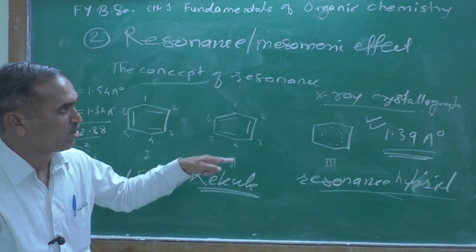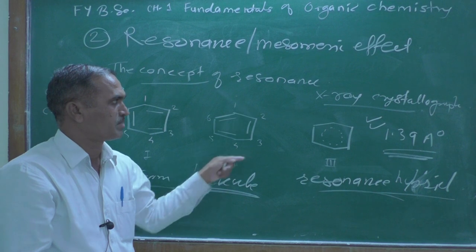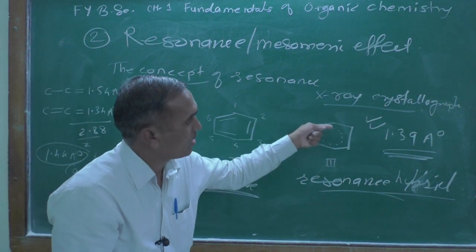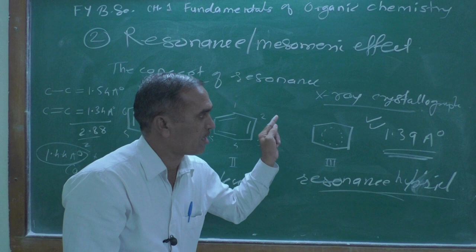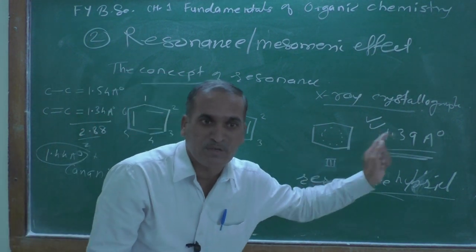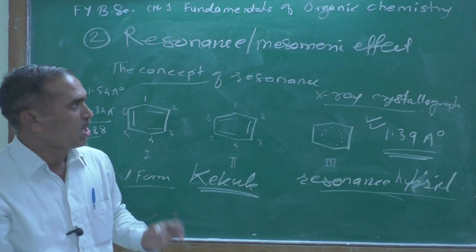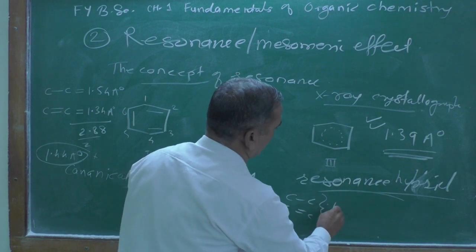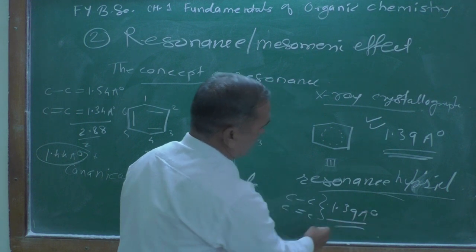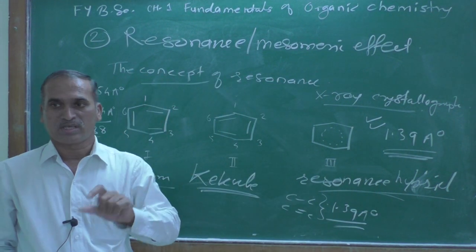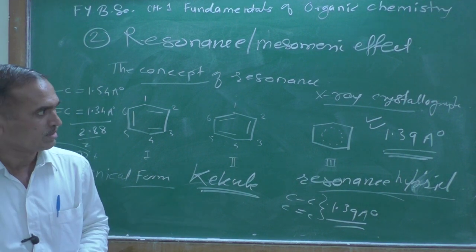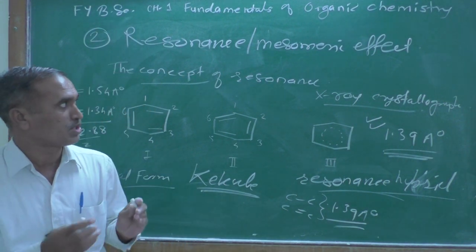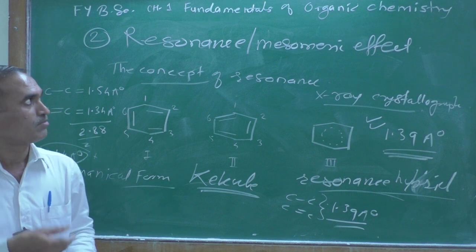Structure number three is called the resonance hybrid, and this is the correct representation of benzene. This is the phenomenon of resonance — where distinct carbon-carbon single or double bonds are not present, but the electron density over all carbon atoms is identical at 1.39 Å. Always remember for competitive exams: the carbon-carbon bond length in benzene is 1.39 Å.